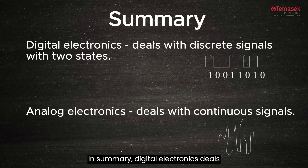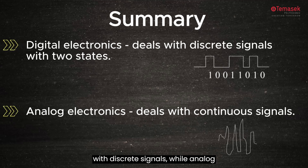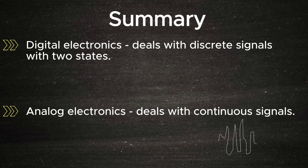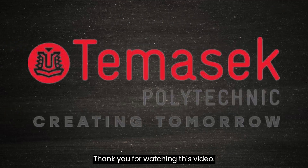In summary, digital electronics deals with discrete signals, while analog electronics deals with continuous signals. Thank you for watching this video.